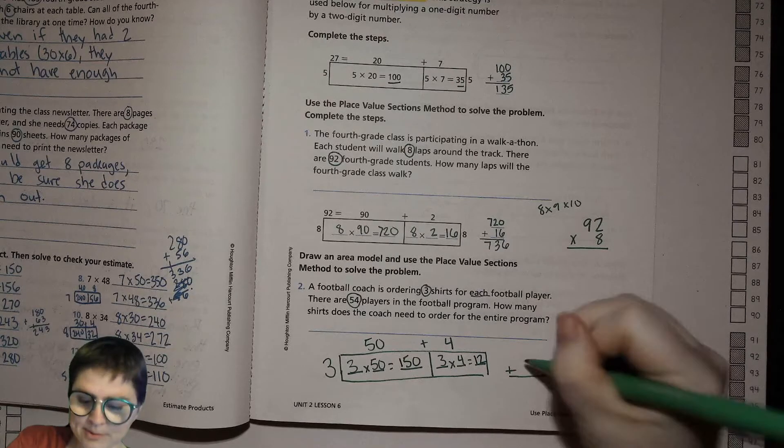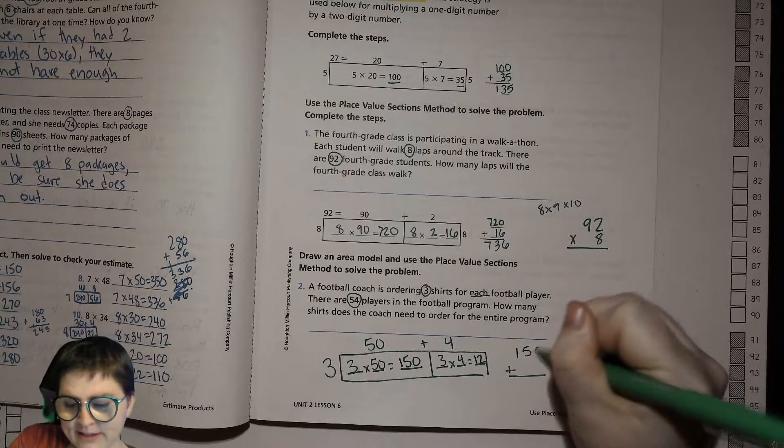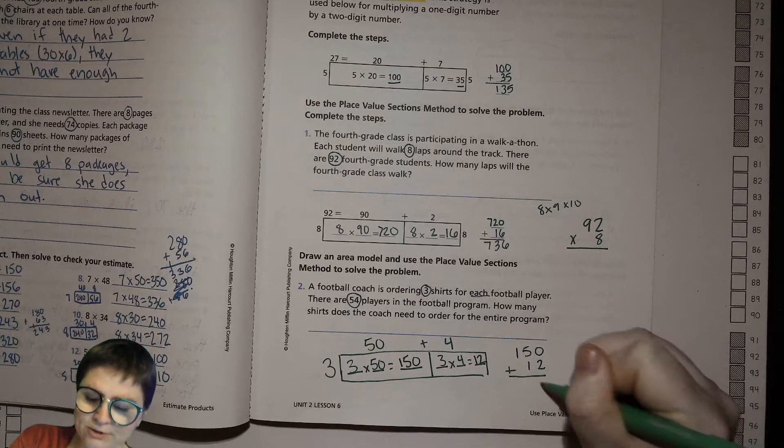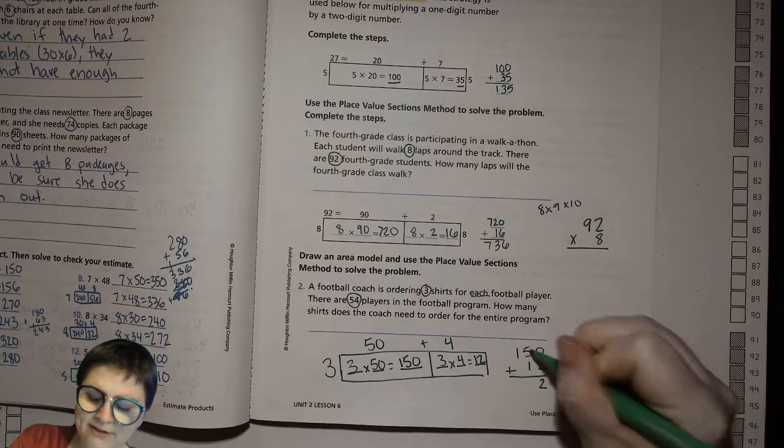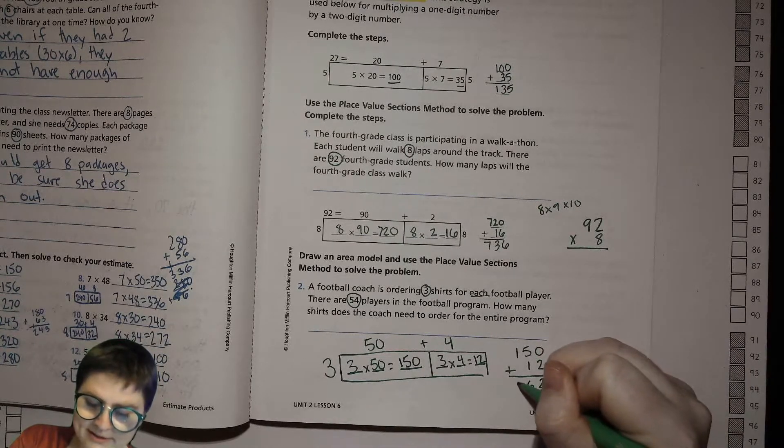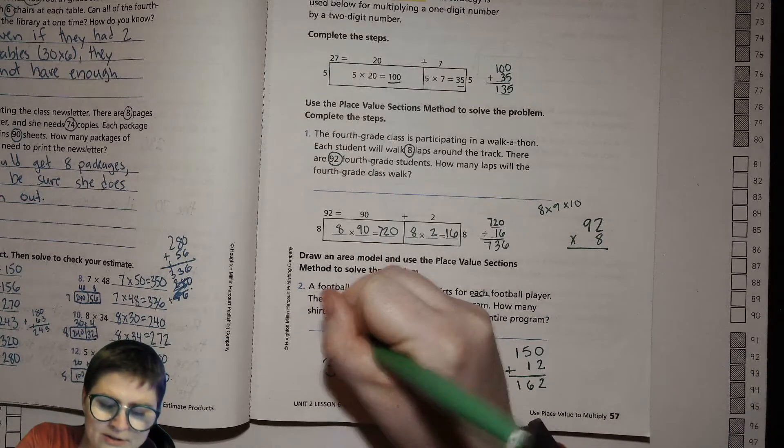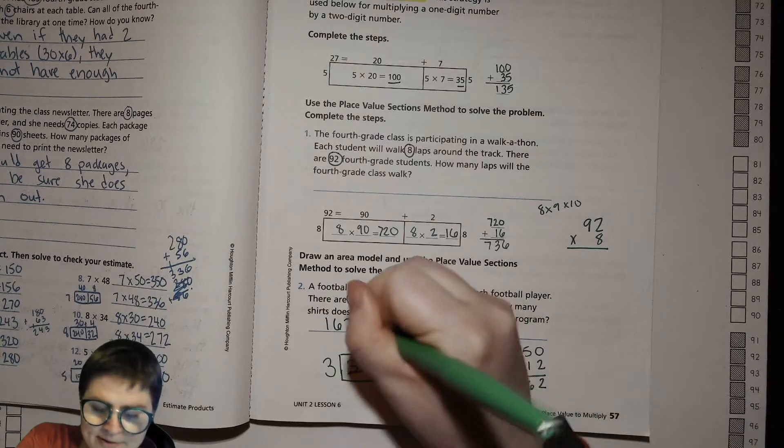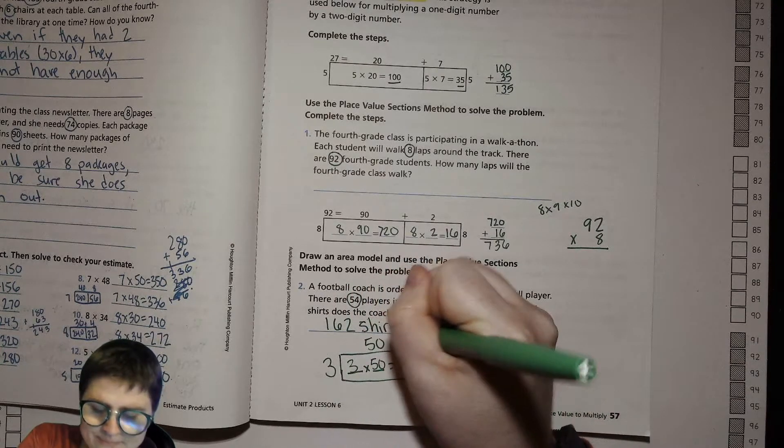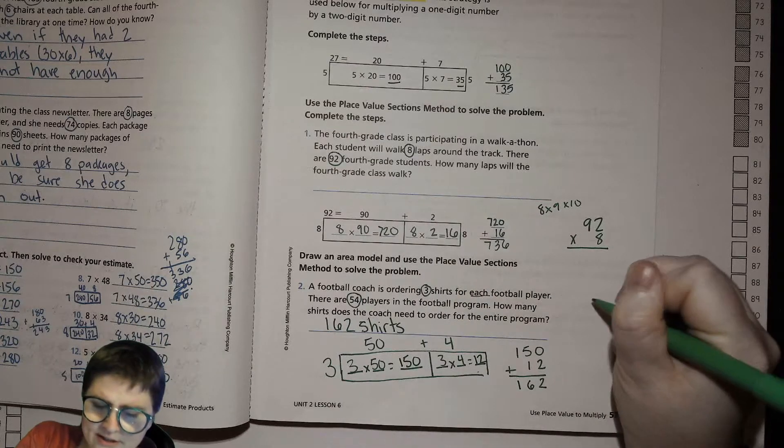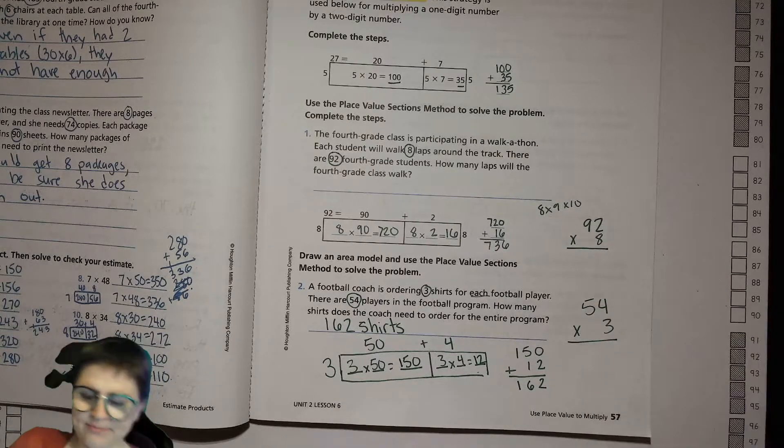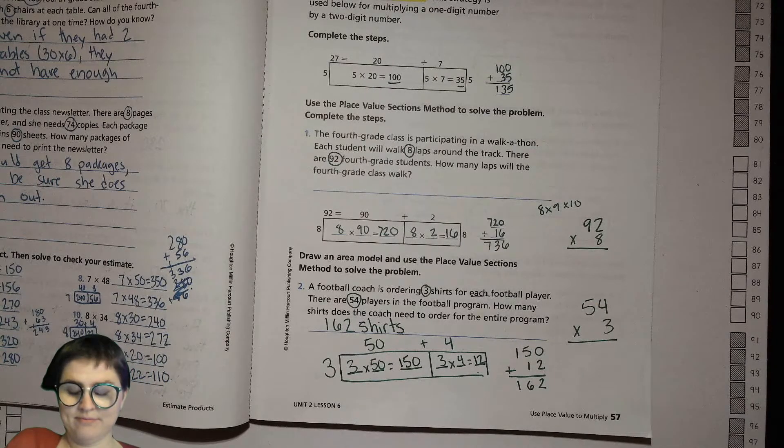What do we do from here? Are we done? No, we need to add those up. So we'll put our 150 there and line up our 12 carefully underneath. 0 plus 2 is 2, 5 plus 1 is 6, and 1 plus nothing is 1. So the coach needs to order 162 shirts. And we just solved 54 times 3.